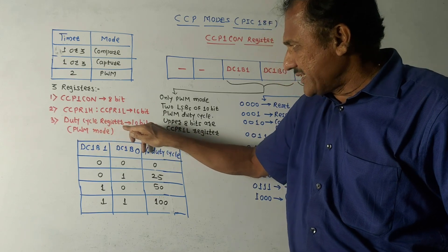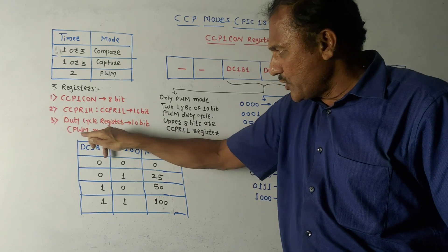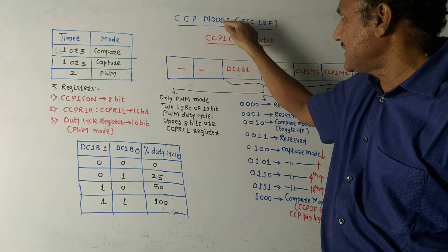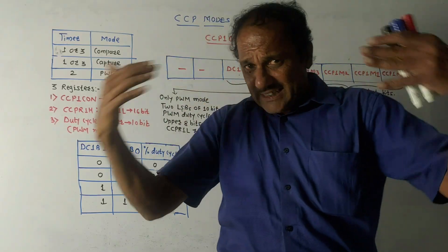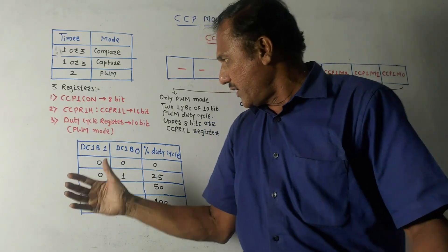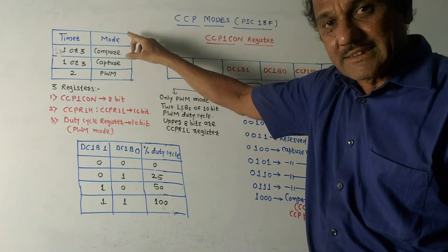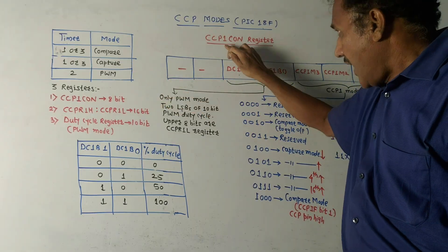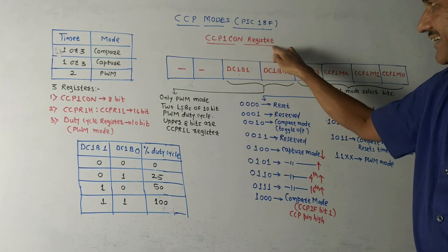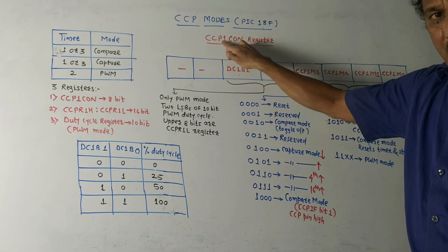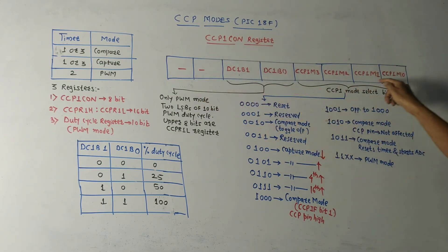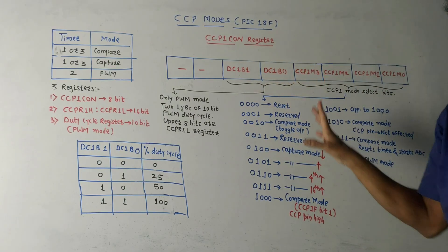The third register is the duty cycle register — a 10-bit register used in PWM mode, consisting of 8 bits plus the CCP1 control register bits. For a generalized question explaining CCP modes, you need to mention these registers, the timers used, and the contents of the CCP1CON register — the compare, capture, and PWM mode control register.